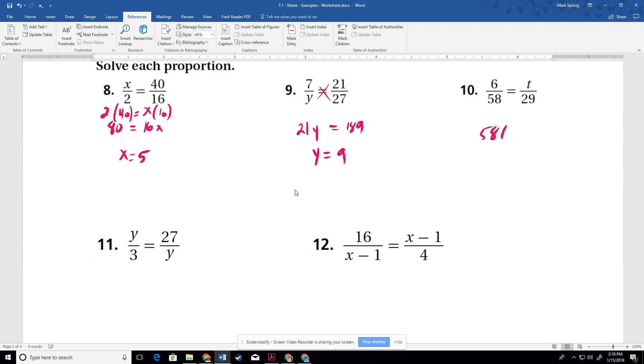We get 21y like this. And then we get 7 times 27. 7 times 27, which is 189. And then we get divide that by 21, get 9. So y is 9. Awesome. All right. So we get 58t equals 6 times 29. We're just doing a little cross multiply, right? No big deal. We divide that by 58. So t is 3.